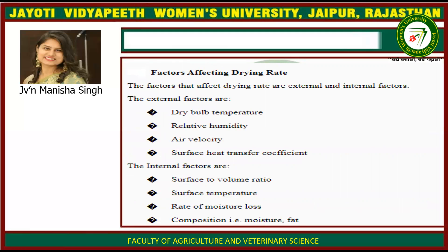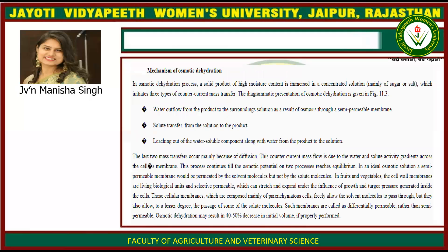Factors affecting the drying rate are external and internal factors. External factors are dry bulb temperature, relative humidity, air velocity, and surface heat transfer coefficient. Internal factors are surface-to-volume ratio, surface temperature, rate of moisture loss, and composition — that is, moisture and fat content.